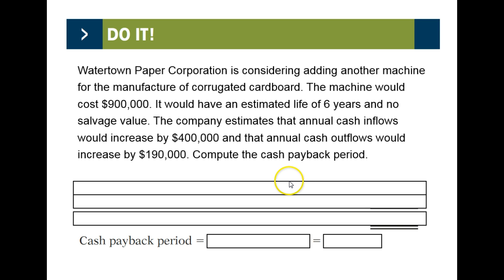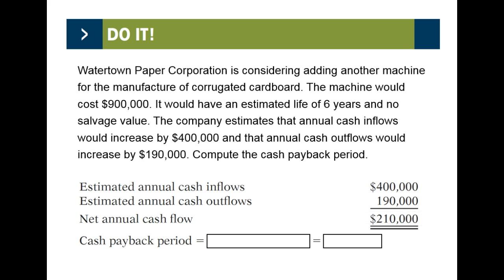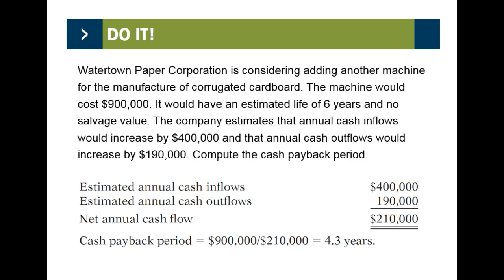Watertown Paper Corp. is considering adding a machine for the manufacture of corrugated cardboard. The machine would cost $900,000, have an estimated life of six years with no salvage value. Annual cash inflows would increase by $400,000 and annual cash outflows would increase by $190,000. To compute the cash payback: $400,000 minus $190,000 gives $210,000 net cash flow. Dividing $900,000 by $210,000, the cash payback is 4.3 years out of a six-year estimated useful life.